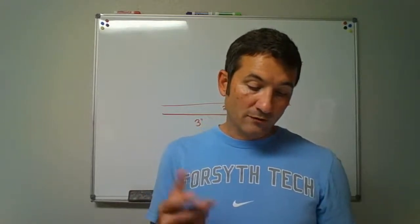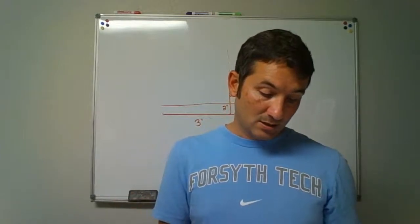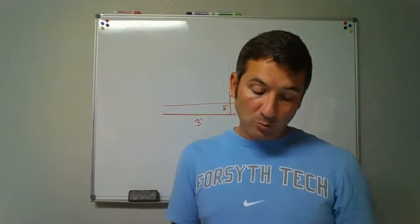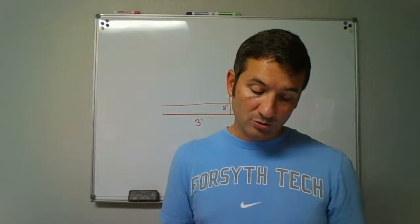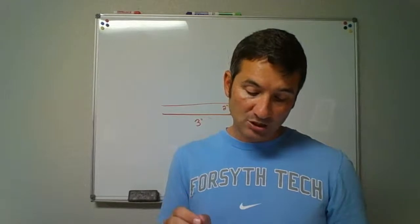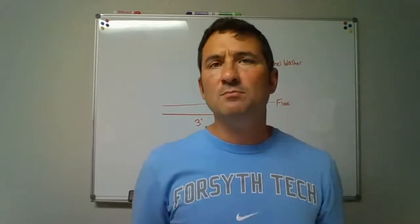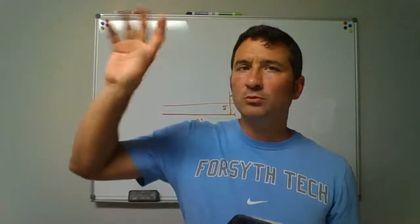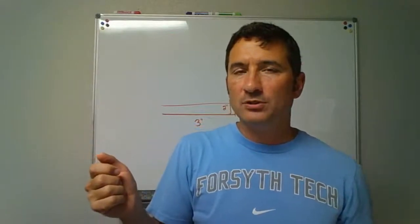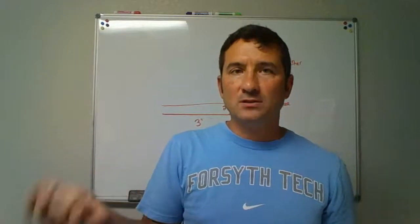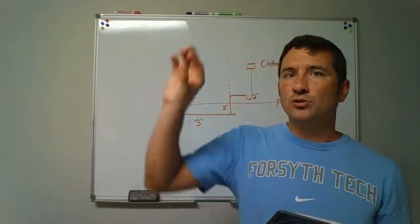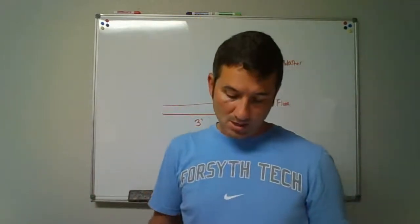Section 424 covers faucets and other fixture fittings. Section 424.2: hand-held showers shall conform to ASME standards and provide backflow protection. This can be overlooked — if you replace a shower head with a handheld that doesn't have backflow protection, an inspector will want to see either a built-in vacuum breaker or an anti-siphon device.